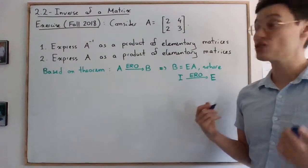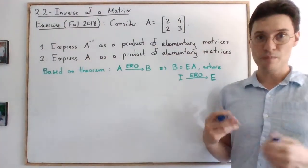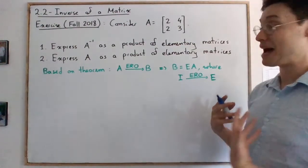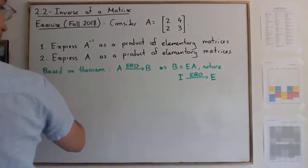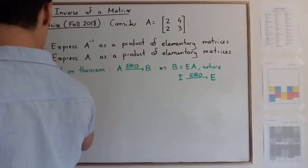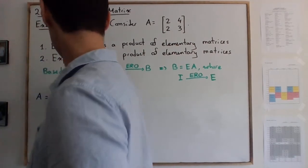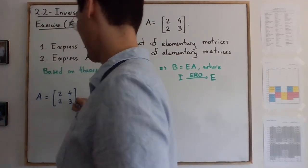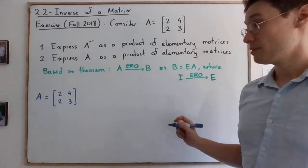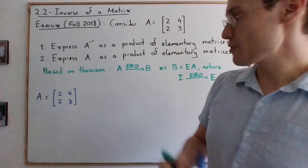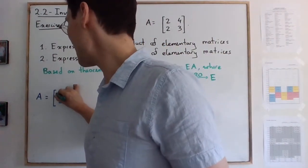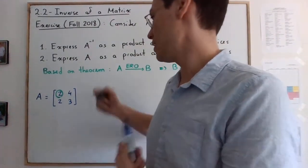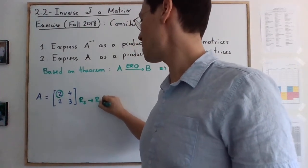So the algorithm is actually quite simple. What we're going to do is we're going to row reduce A, but we're going to keep track of all the row operations that are involved and we're going to label them as our elementary matrices. So we have A that is equal to the matrix that is given 2, 2, 4, 3. And then, I prefer eliminating the row first. So I'm going to select my first pivot, which is going to be this one. And I will do row 2 becomes row 2 minus row 1.